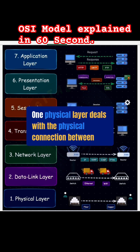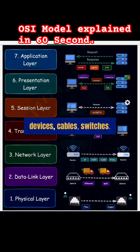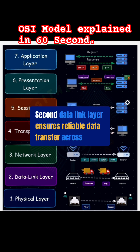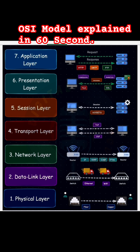One, physical layer, deals with the physical connection between devices — cables, switches. Second, data link layer, ensures reliable data transfer across a physical link.